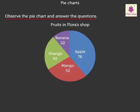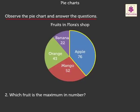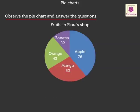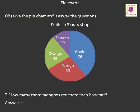Question two: which fruit is the maximum in number? As apples occupy the largest segment in the pie chart, the answer is apple. Question three: how many more mangoes are there than bananas? Here we need to subtract the number of bananas from the number of mangoes.